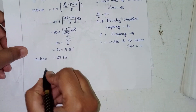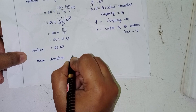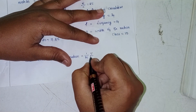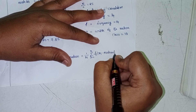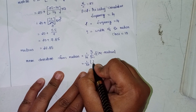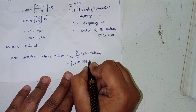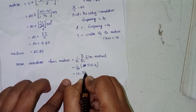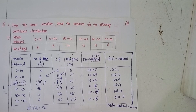The mean deviation from median formula is: 1/n × summation fi × |xi − median|. Here n is 50. The summation value is 517. So mean deviation = 517 divided by 50, which gives 10.34. This is the mean deviation from median value for the first problem.